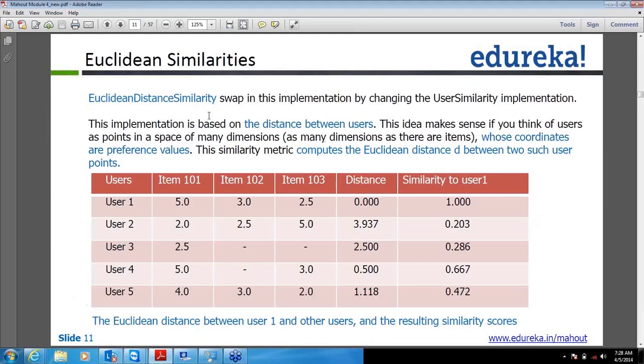We use the same formula from last time: similarity equals 1 upon 1 plus D, where D is the distance. So when distance is 0, similarity comes as 1 upon 1 plus 0, which equals 1. Same way for user 2, distance will be calculated as 3.97, but in the formula it is 1 upon 1 plus D.